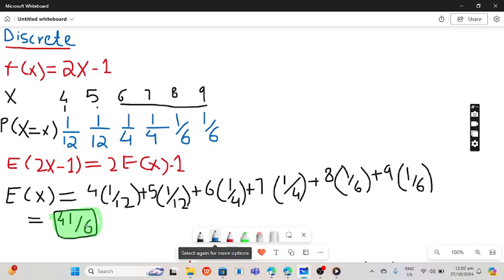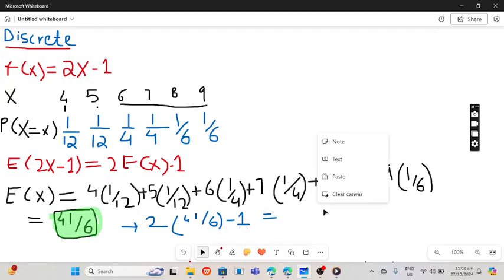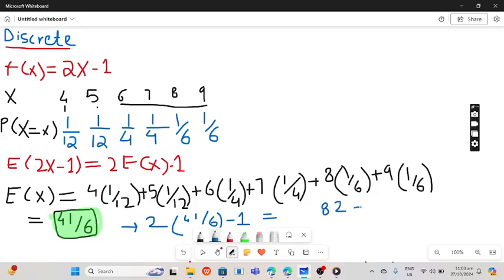Now we have to just incorporate this into this. 2 will be multiplied with 41 upon 6 and minus 1, so it becomes 82 minus 6 upon 6.